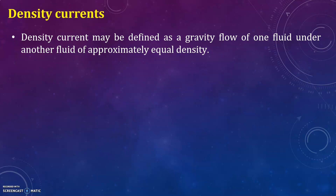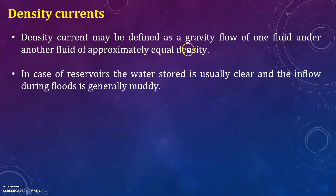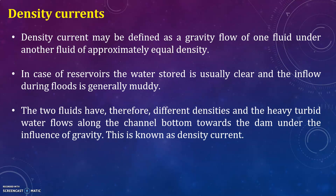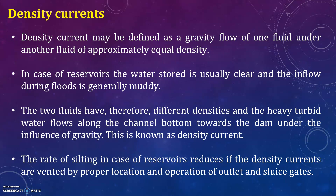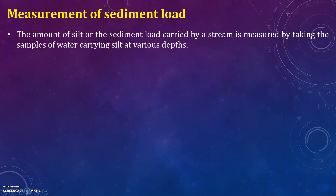A density current may be defined as a gravity flow of one fluid under another fluid of approximately equal density. In the case of reservoirs, the water stored is usually clear and the inflow during floods is generally muddy. The two fluids therefore have different densities, and the heavy turbid water flows along the channel bottom towards the dam under the influence of gravity — this is known as a density current. The rate of silting in reservoirs reduces if the density currents are vented by proper location and operation of outlet and sluice gates.